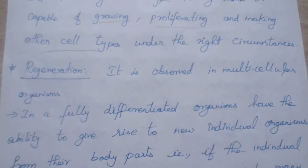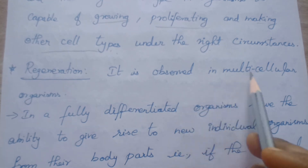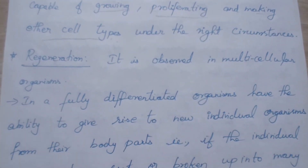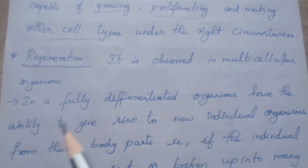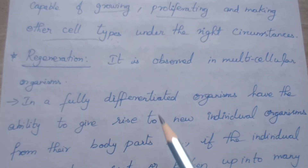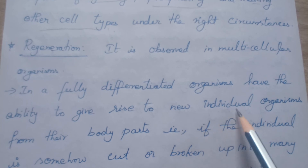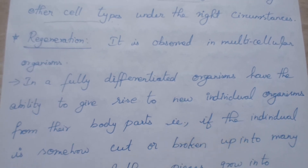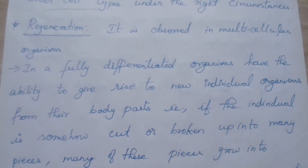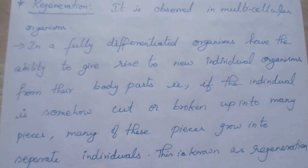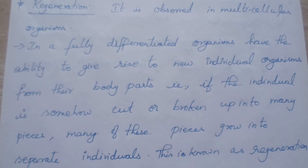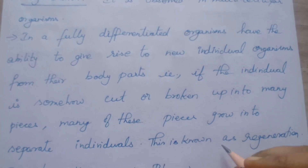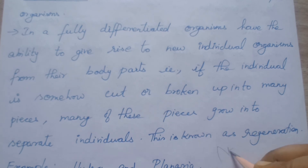The next type of asexual reproduction is regeneration. It is also observed in multicellular organisms, but it is not similar to reproduction because the process is totally different. In a fully differentiated organism — with head, hands, legs — it has the ability to give rise to new individual organisms from their body parts. If the individual is somehow cut or broken into many pieces, many of these pieces grow into separate individuals. This is known as regeneration.